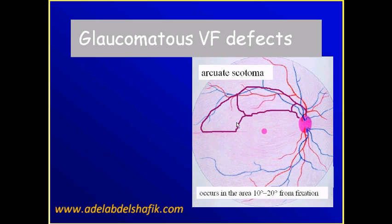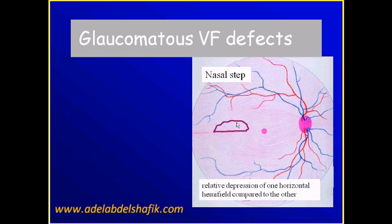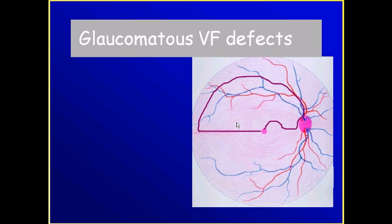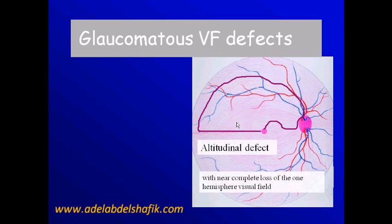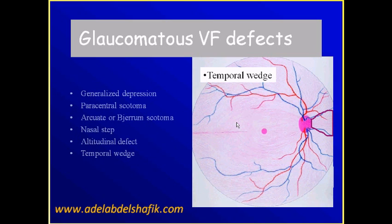The arcuate scotoma respects the horizontal meridian. Nasal step — it's an affection more in the upper compared to the lower, or the reverse: more in the lower compared to the upper. Altitudinal defect — this is not an arcuate. It's an affection of almost the upper half; we call this altitudinal defect. And temporal island, or temporal wedge. So these are the characteristic changes of glaucoma damage.